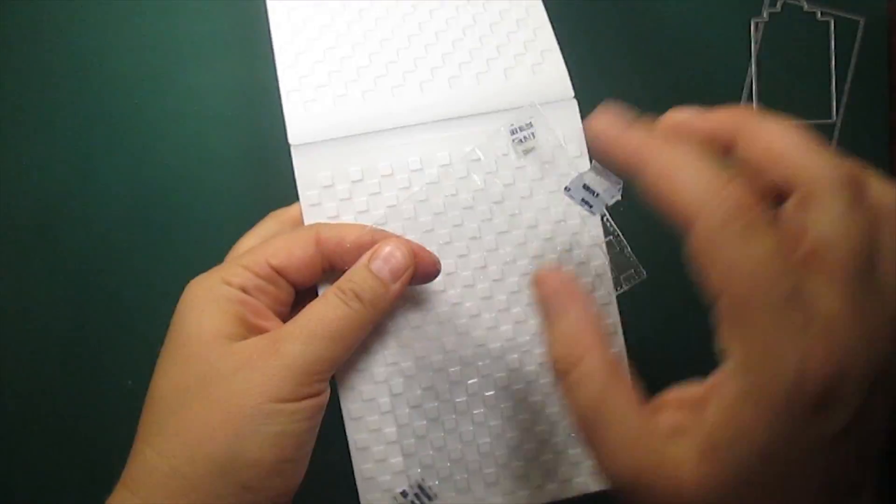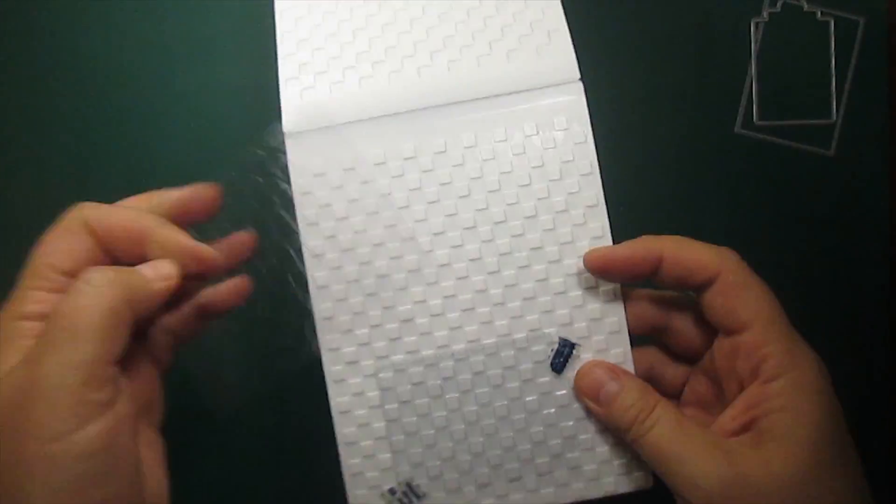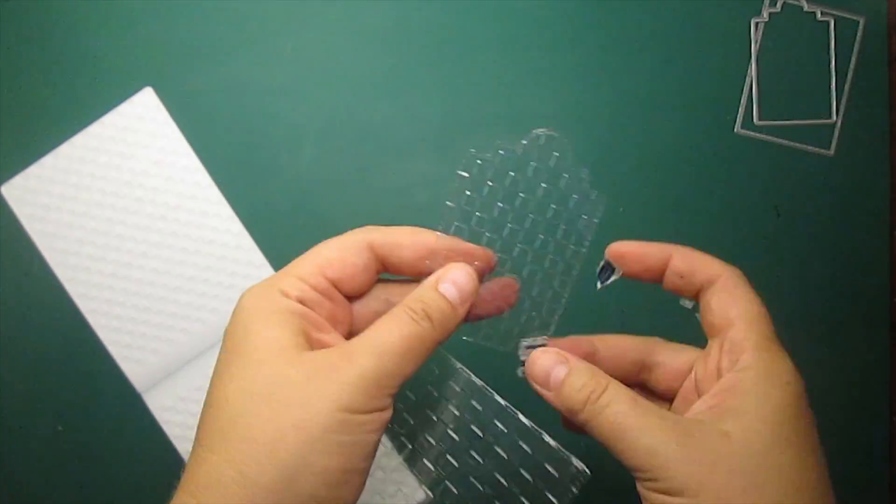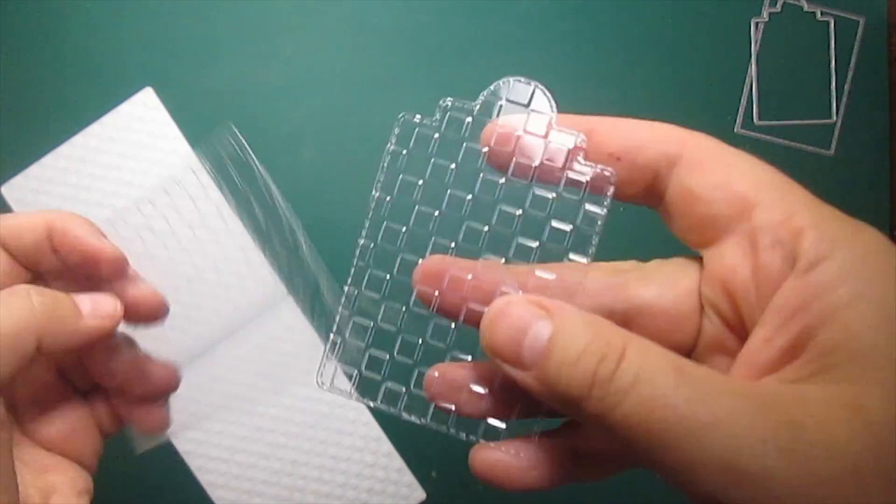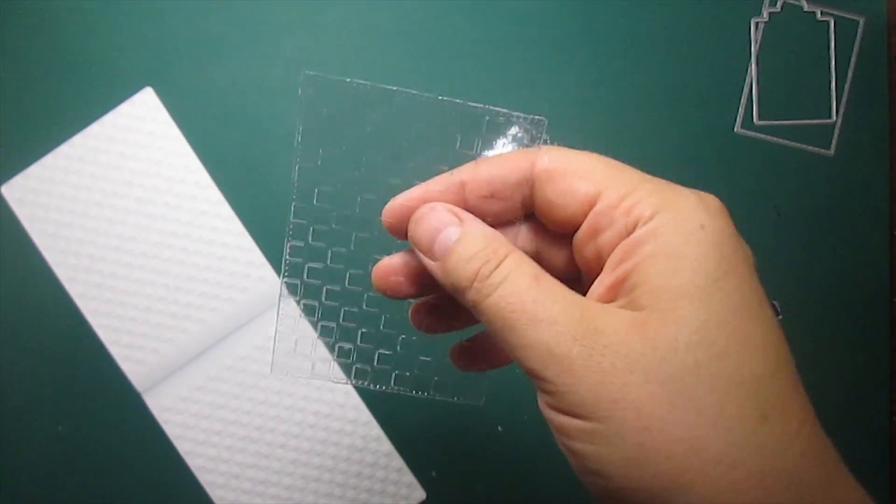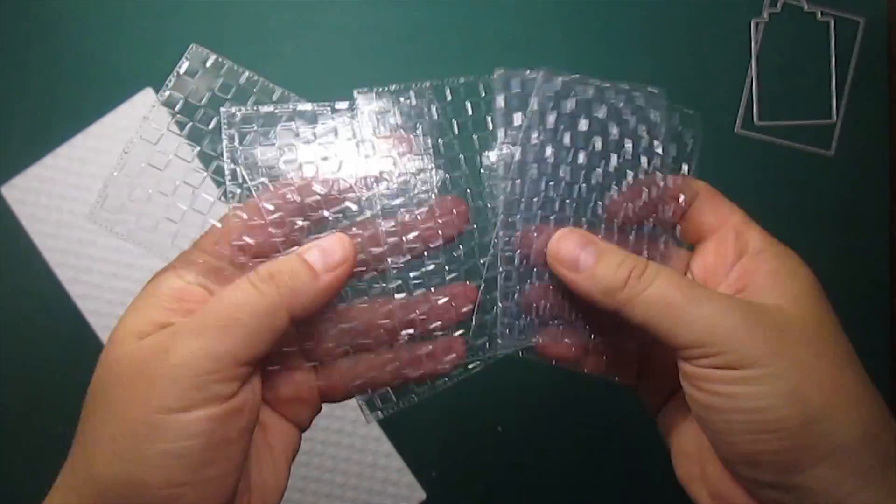And then I'll run it through the die-cutting machine. We'll get a nice shiny embossed surface. For the pocket letter we'll need one tag and nine rectangles to make panels.